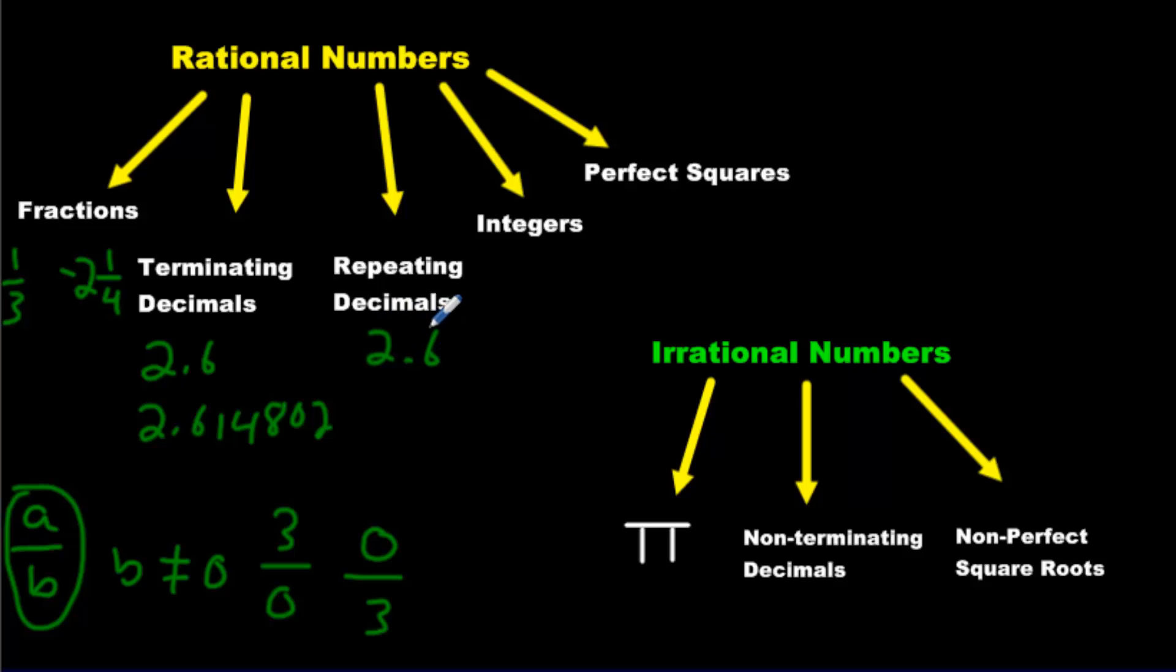For example, 2.6 with a line over it means this is 2.66666666 for all of eternity. It'll go forever. So even though it repeats, it's a rational expression because this is just two holes and 6 over 9.